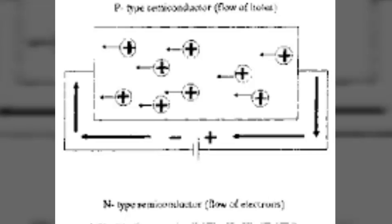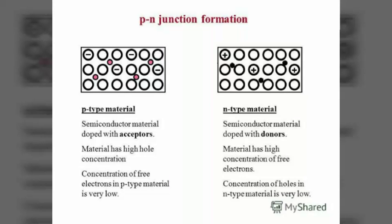Next is P-type conductivity. When a potential difference is applied to the P-type semiconductor, the holes are shifted from one covalent bond to another. As the holes are positively charged, they are directed towards the negative terminal, constituting what is known as hole current. It must be noted that both N-type and P-type semiconductors are electrically neutral.